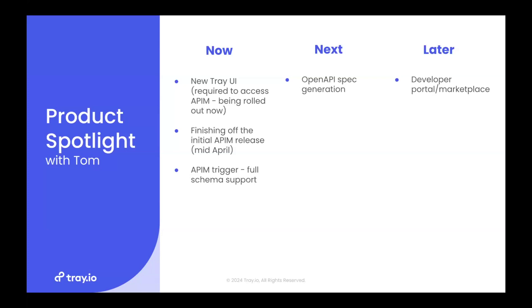It should be available to everyone within the next couple of weeks. If you haven't got it and you'd like to jump on it, just reach out and we'll get you enabled. So, new UI to access API management. The next key step is finishing off the initial API management release. This will include a specific API management trigger, which will essentially enable you to define schemas — both input and output — so you can use the schema throughout the workflow to determine how the operation is used and how the API works. That is coming with the initial version and will be available around early to mid-April. API management will be available to all customers and you'll just need to be on the new UI to access it.